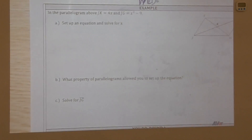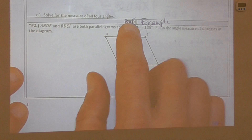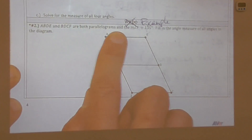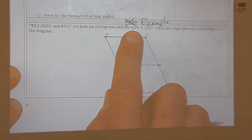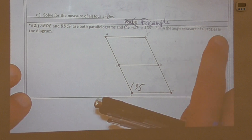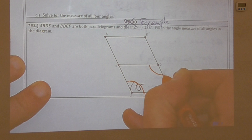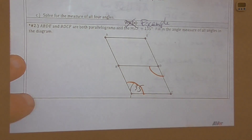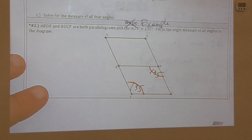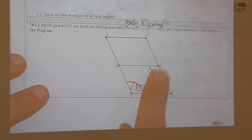On this page we'll do the bottom example first. Parallelograms ABDE and BDCF are both parallelograms, and the measure of angle F is 135 degrees. We need to fill in the angle measures of all angles in the diagram. Let's start: angle F and its opposite angle D are congruent, so angle BDC is also 135 degrees.